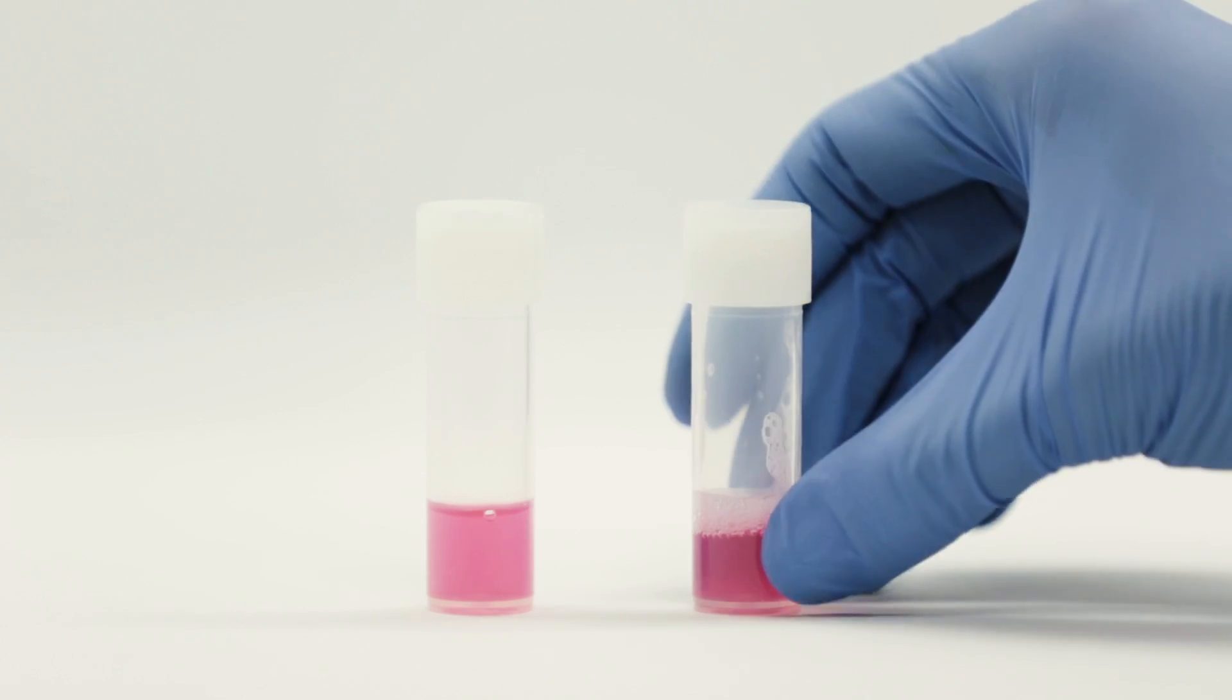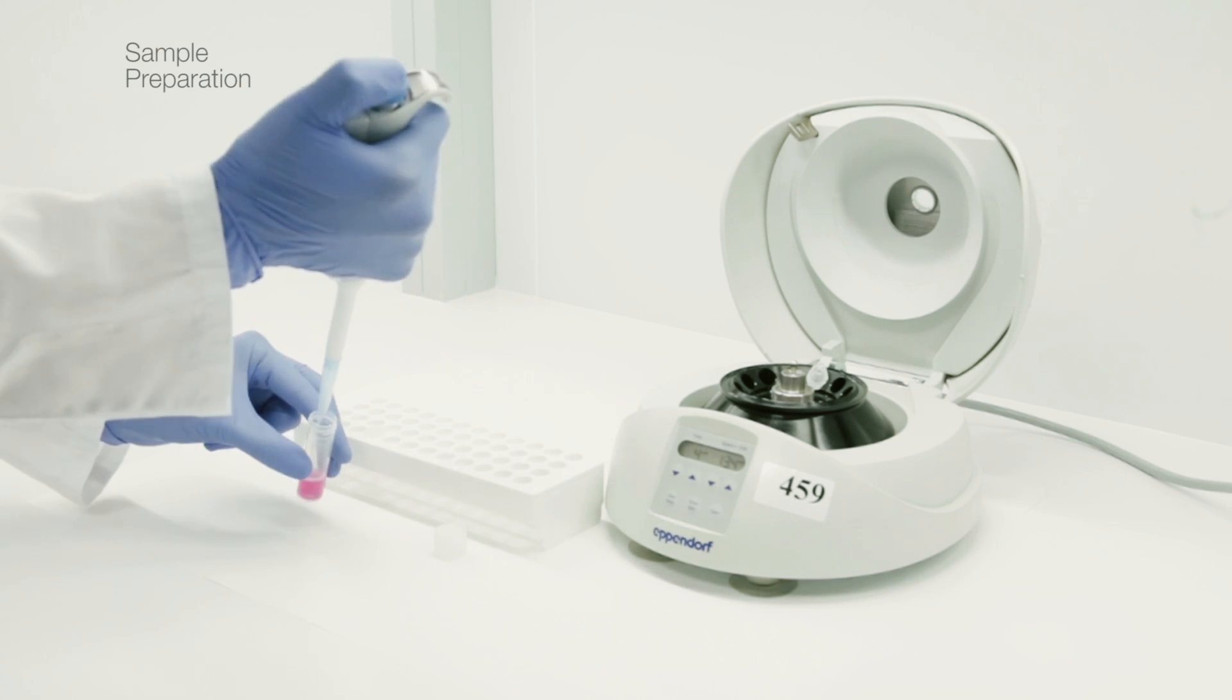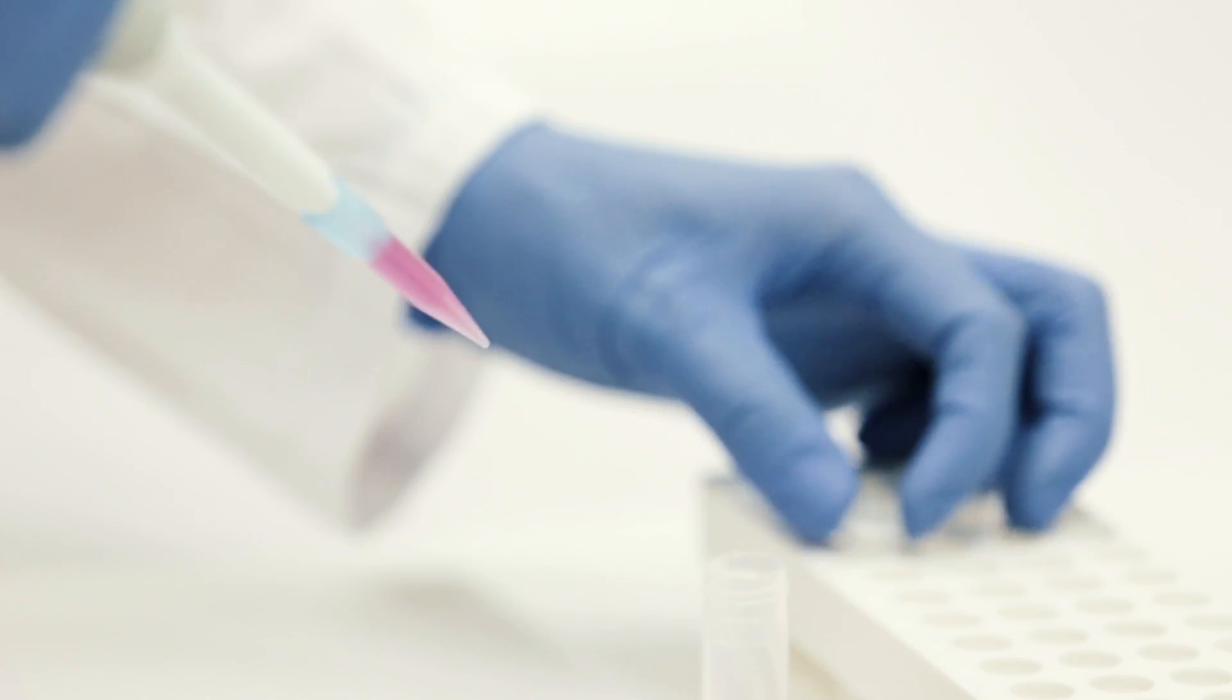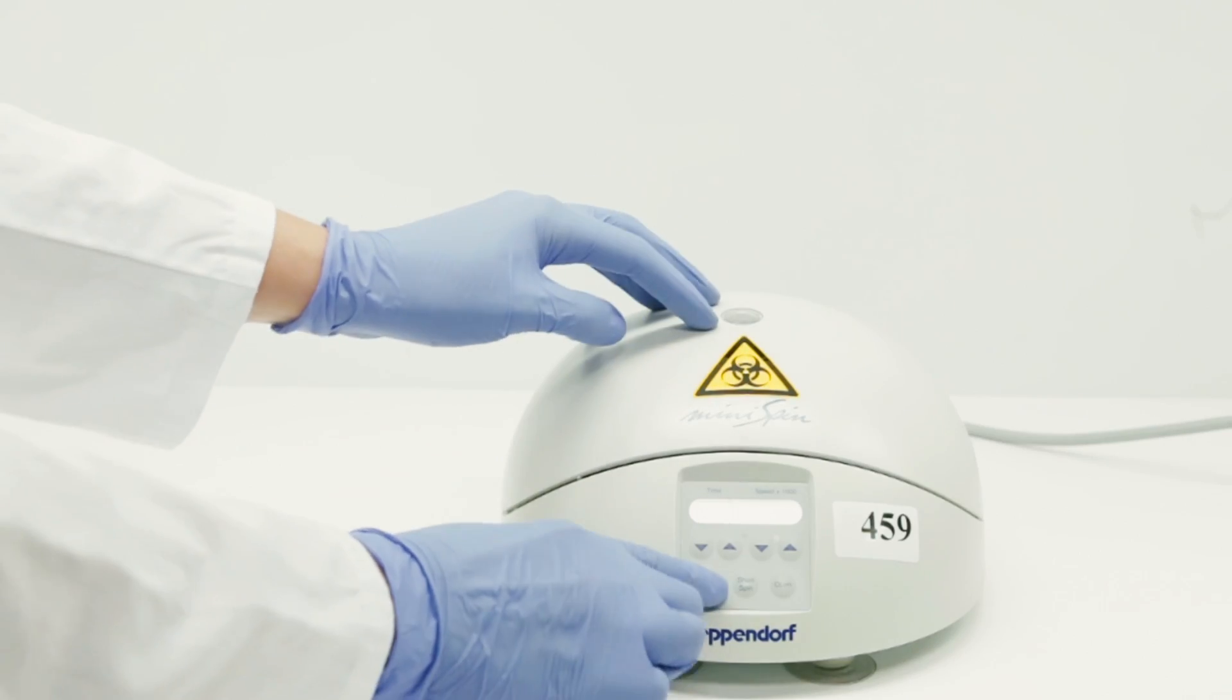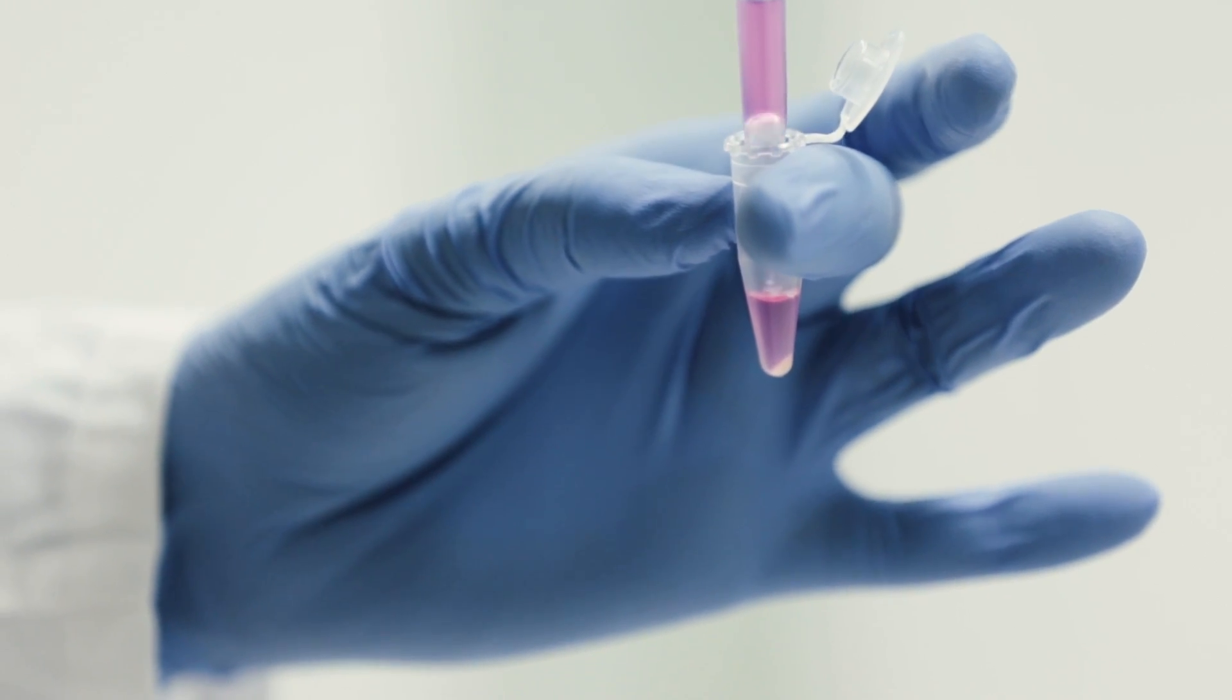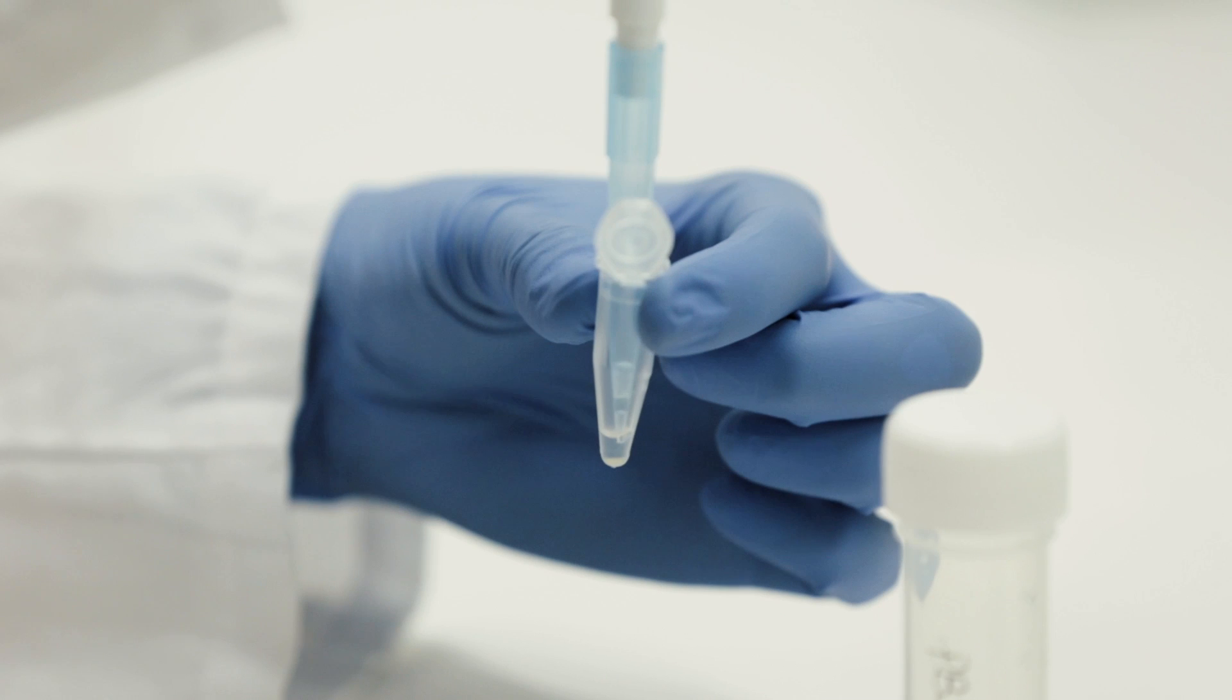Transfer the sample to a conic centrifuge tube and spin it at 300 to 500 Gs for 10 minutes at 2 to 8 degrees Celsius. Remove the supernatant, including the mucus that may surround the cell pellet. Gently tap the tube to release the cells, add PBS, and resuspend them by pipetting carefully.